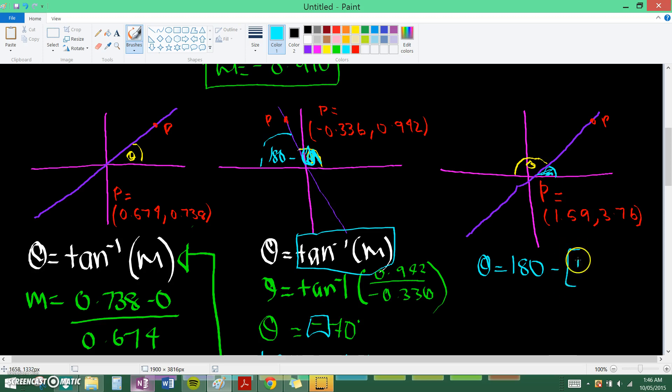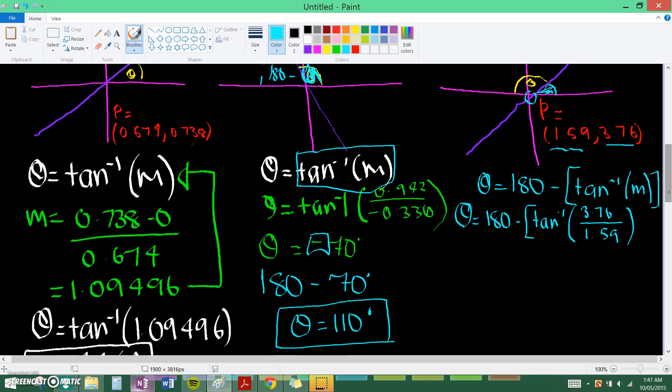So theta equals 180 minus tan inverse m. And m in this case would be 3.76 divided by 1.59, derived from here. And the reason why I'm not doing minus y1 and minus x1 is because it's the origin. So it would just be minus 0, minus 0, and that's not time efficient or useful at all. If you plug that whole thing into your calculator, you should come out with 113 degrees. And there is your answer.